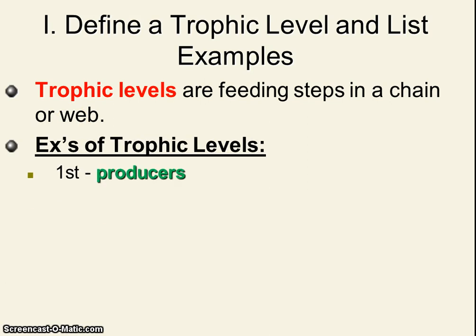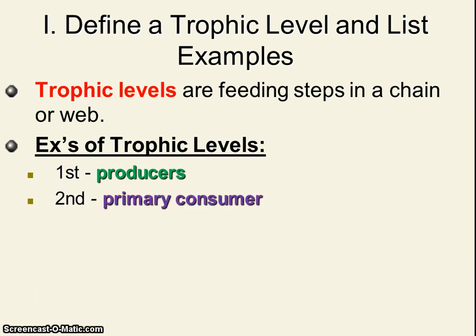The first level is producers — let's say a plant — that's a word we've already learned last class. Now in our food chain from last class, the next thing that eats the grass was a consumer, specifically a snail eating the grass, and we're going to call it primary. The word primary means first. This is the second organism after the plant, but it's the first consumer.